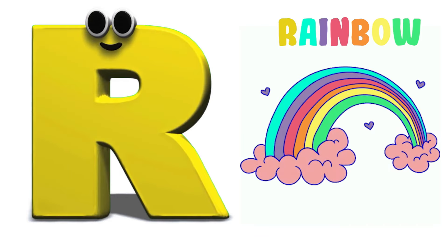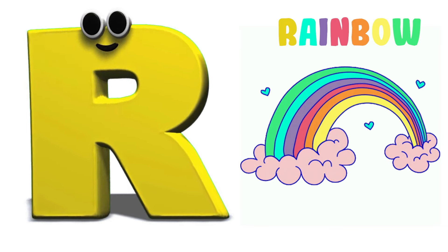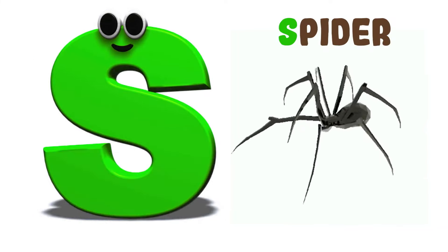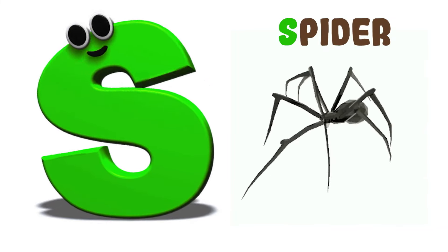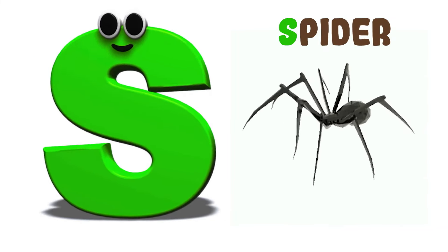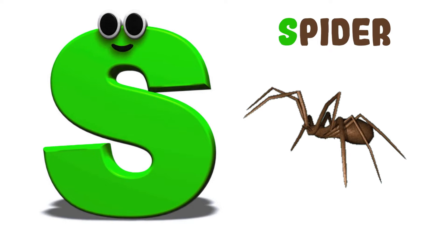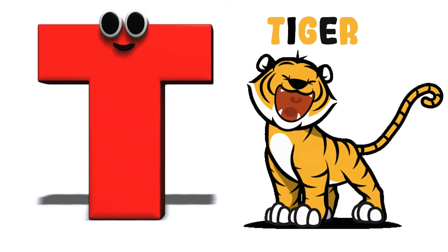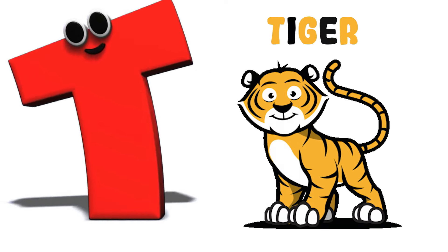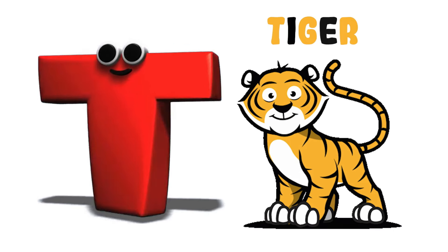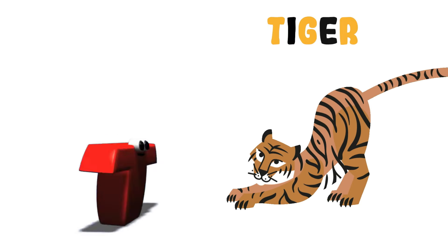R is for Rainbow, rainbow, rainbow, R-rainbow. S is for Spider, spider, spider, S-spider. T is for Tiger, tiger, tiger, T-tiger.